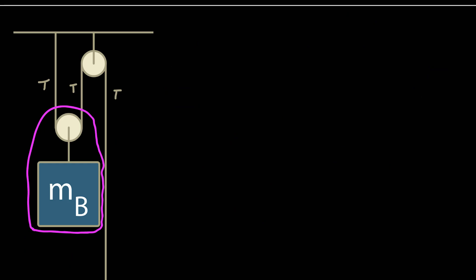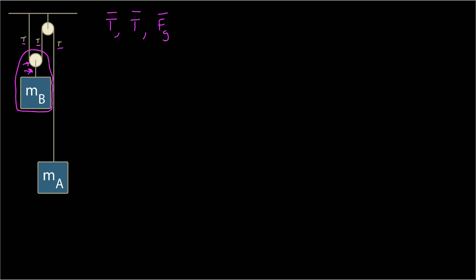I've zoomed in on my picture and isolated my second object. I have the pulley, which is massless by itself, but I've included it as part of object B — this all moves together. The tension everywhere in the string is T, so the tension in each part of the string is T. I'm going to include as the object under analysis everything encircled by the purple line, because this additional pulley piece doesn't move relative to the mass and doesn't add any mass of its own.